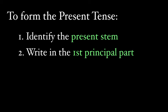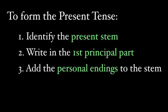Bring the first principal part down. This is the first person singular, the I form of the verb in the present tense. It's already given to us, so use it. Then add the personal endings to the end of the present stem. Once you've done this, your verb should have the endings o, s, t, mus, tis, unt.